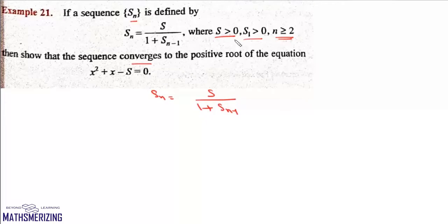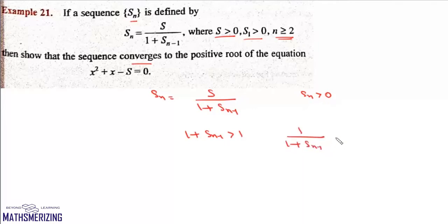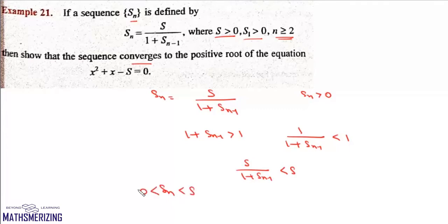Now if S is greater than 0 and S1 is greater than 0, then any SN will be greater than 0. Now 1 plus SN minus 1 will be greater than 1, so 1 upon 1 plus SN minus 1 will be less than 1, and multiplying by S we get S upon 1 plus SN minus 1 will be less than S. So any SN will be greater than 0 but less than S, meaning this sequence is a bounded sequence.